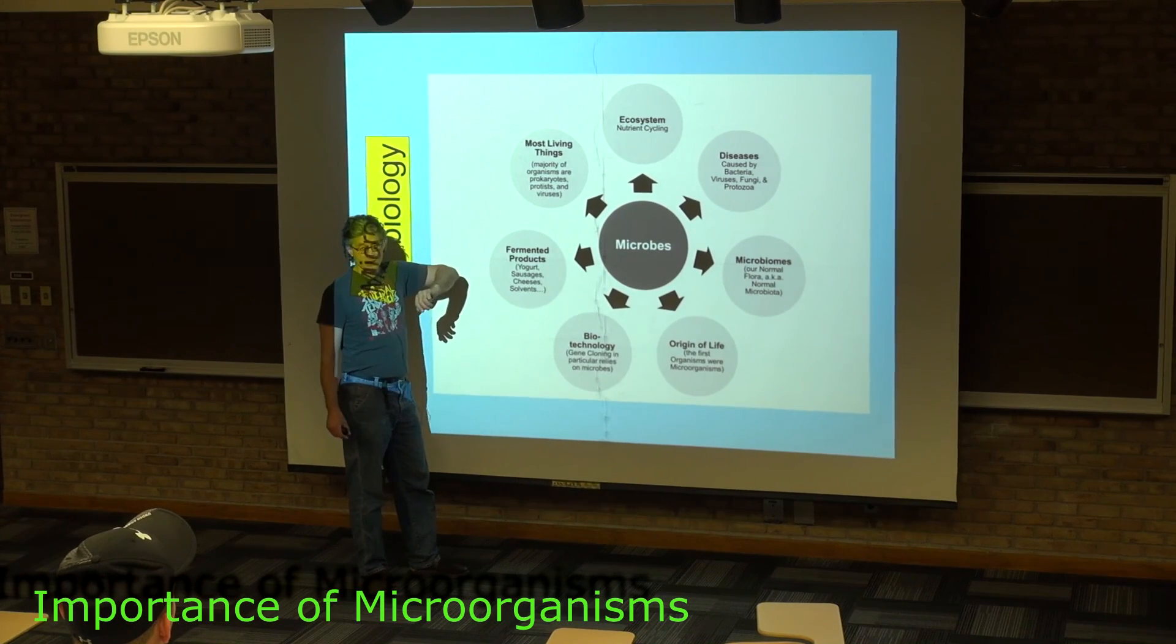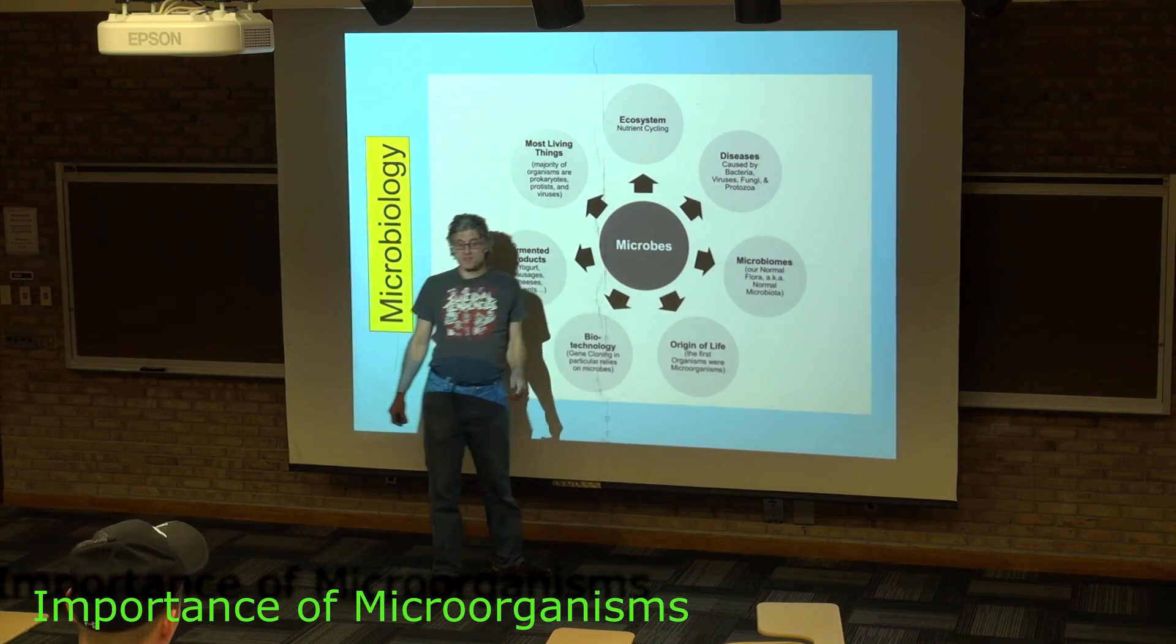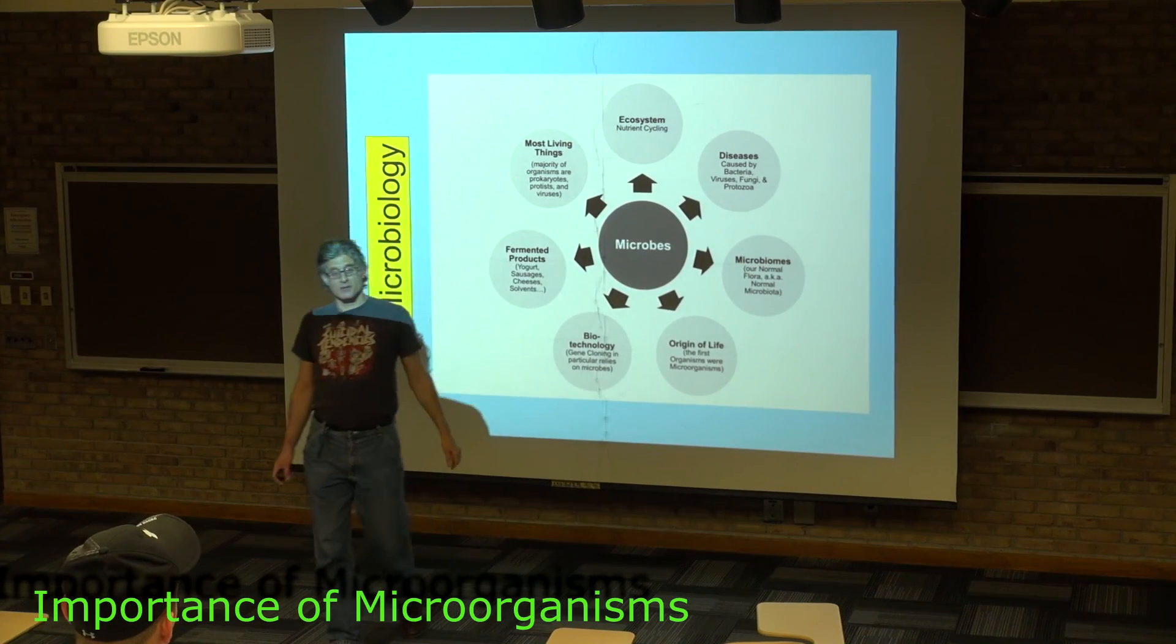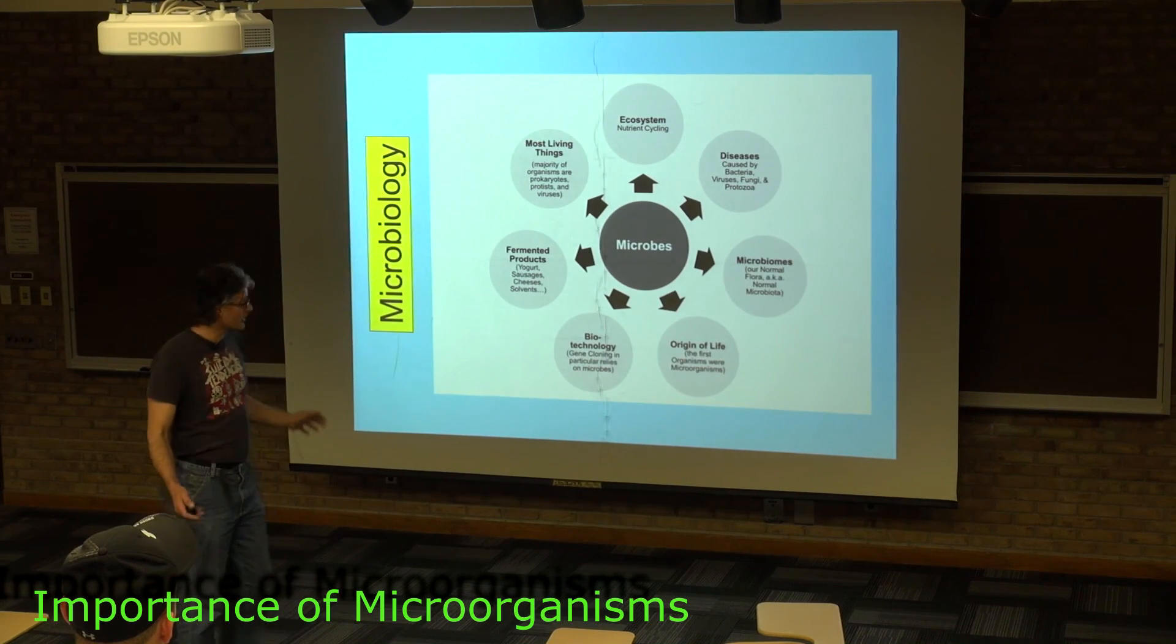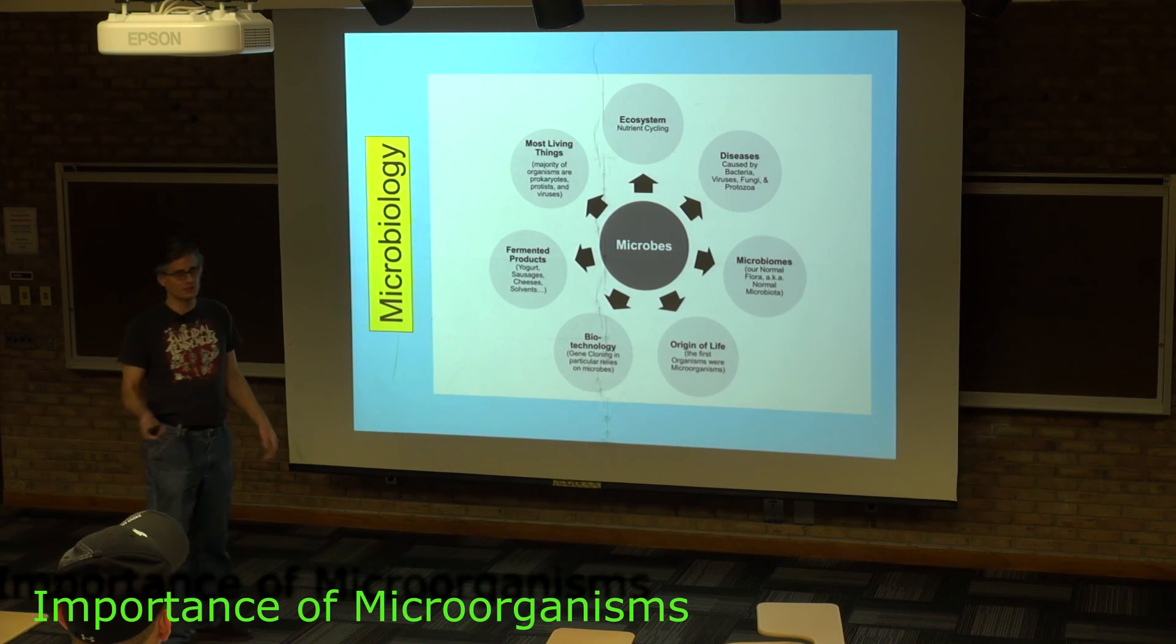Most living things on earth are microorganisms, and of course, most of the living things therefore in ecosystems are microorganisms. So microorganisms turn out to be really important, it's just that you can't see them so it's difficult to appreciate their importance.